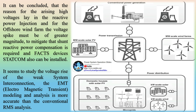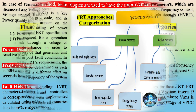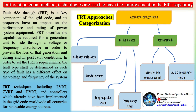Fault Ride-Through (FRT) is a key component of the grid code, and its properties have an impact on the performance and rating of power system equipment. FRT specifies the capabilities required for a generation unit to ride through a voltage or frequency disturbance in order to prevent the loss of that generation unit during and in post-fault conditions. In order to set FRT requirements, the fault type must be determined, as each type has a different effect on the system's voltage and frequency. FRT techniques — including LVRT, ZVRT, and HVRT — and their controllers have been implemented in grid codes worldwide for renewable energy sources.